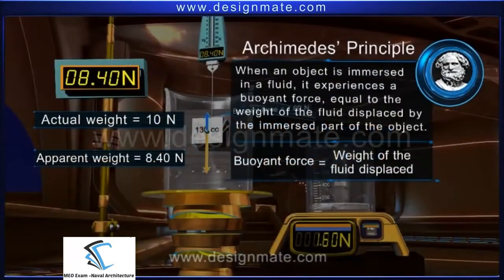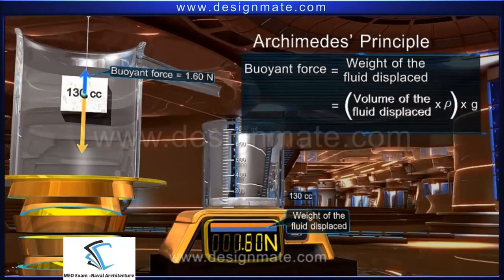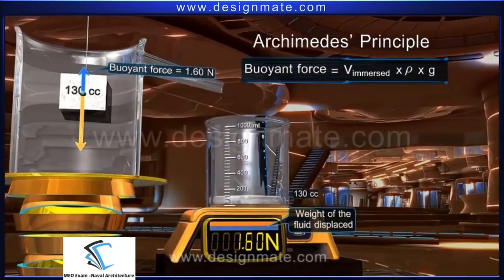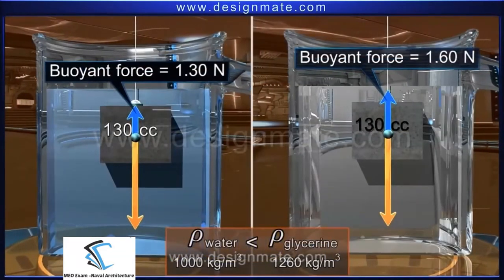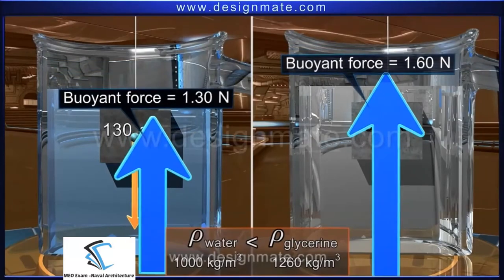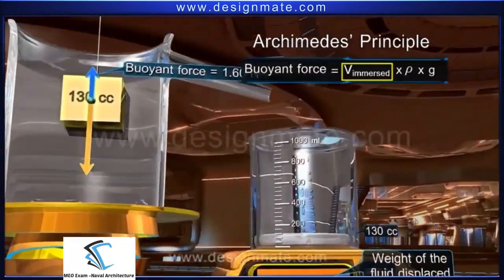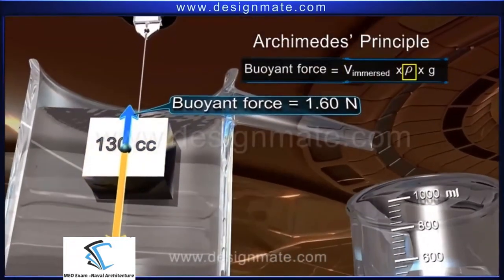Summary: When an object is immersed in a fluid, it experiences a buoyant force equal to the weight of the fluid displaced by its immersed part — this is Archimedes' principle. The buoyant force equals volume of fluid displaced × rho × g, which equals volume of the immersed part × rho × g. For the same object, the denser the fluid, the larger the buoyant force, which depends only on the volume of the immersed part and the density of the fluid.